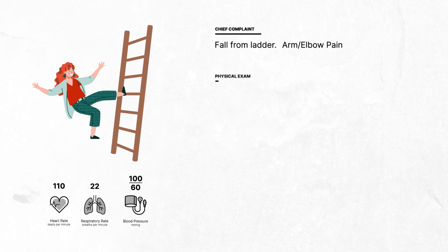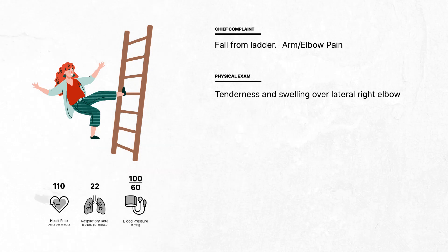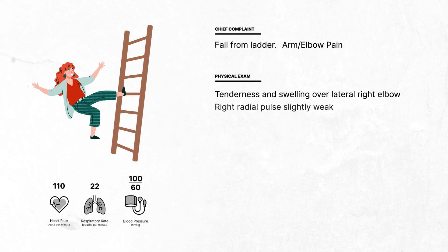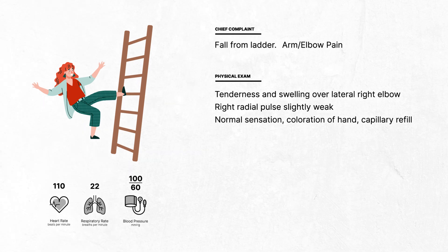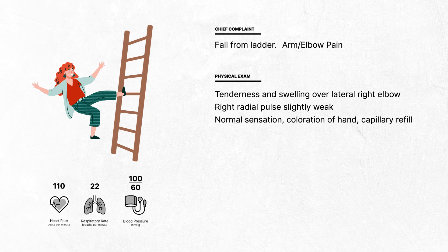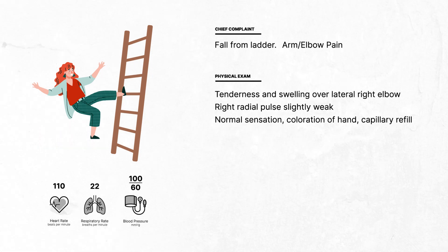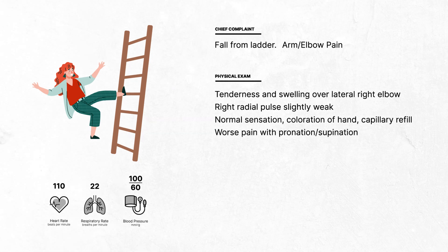Upon physical examination, there was tenderness and swelling over the lateral aspect of her right elbow. Her radial pulse in the affected arm was slightly weakened, but sensation remained intact. Her hand exhibited normal coloration, and capillary refill was less than 2 seconds. A notable finding was that she experienced heightened pain when attempting to pronate or supinate her forearm.